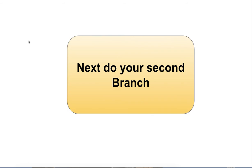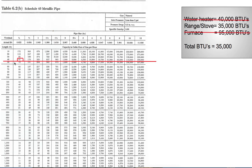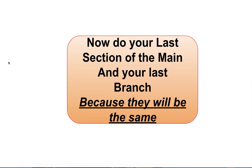Next, the second branch serves the range at 35,000 BTUs. In the 40-foot column, half inch works here. Then we can do the last section of the main and the last branch, because they will be the same size.